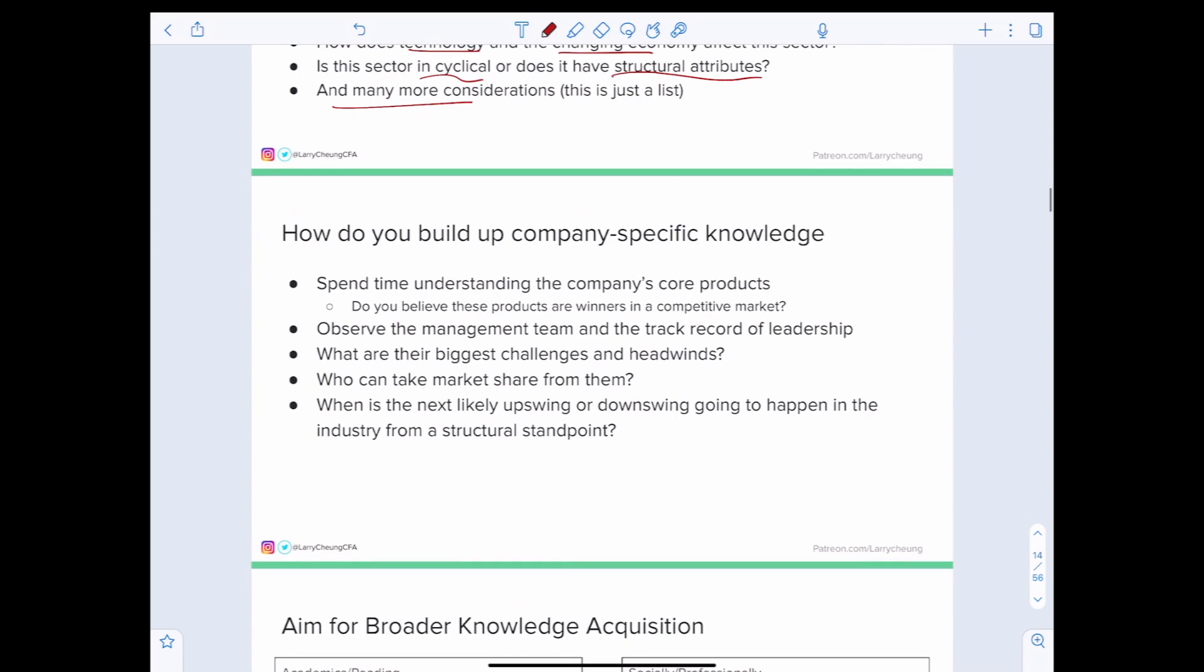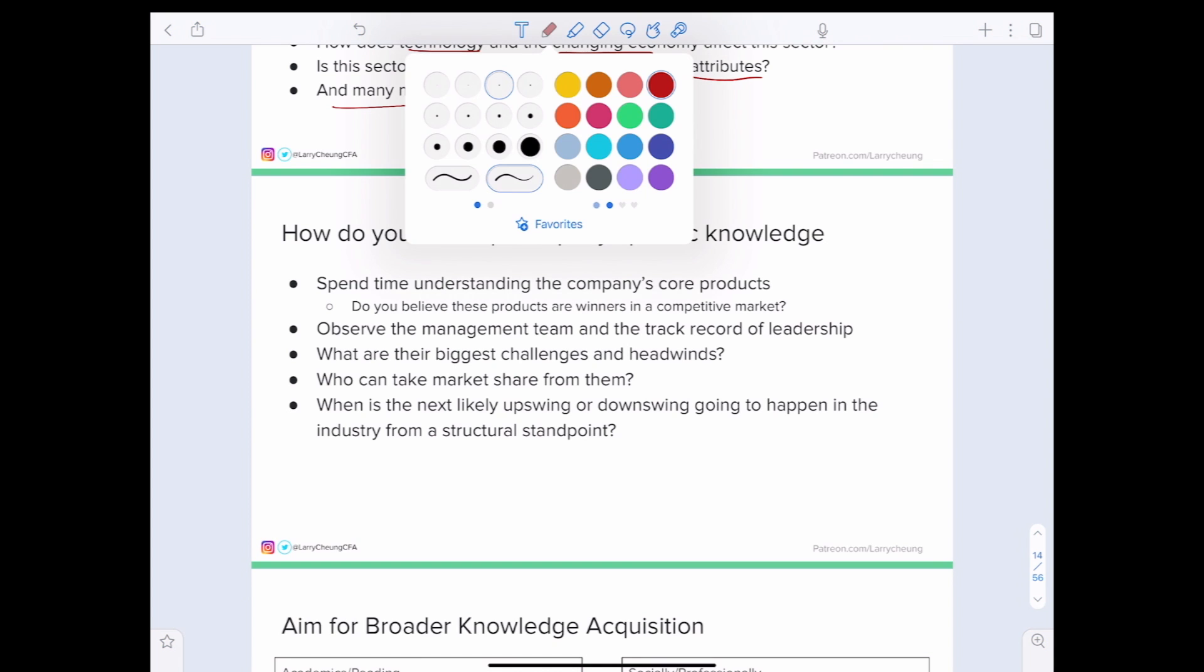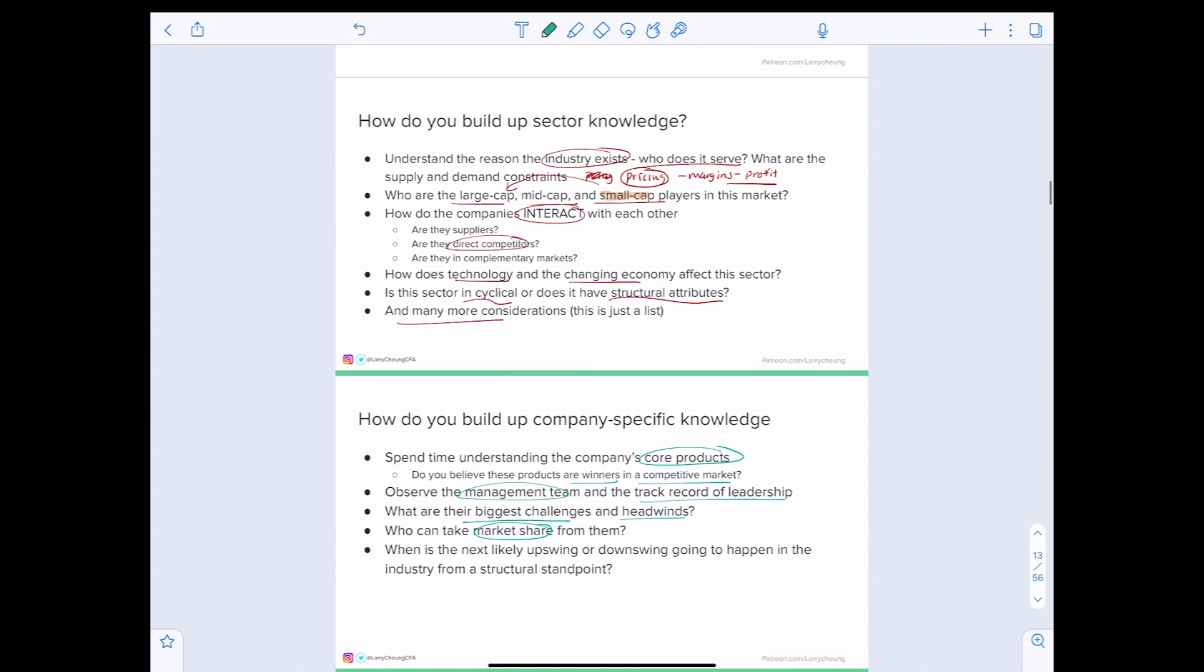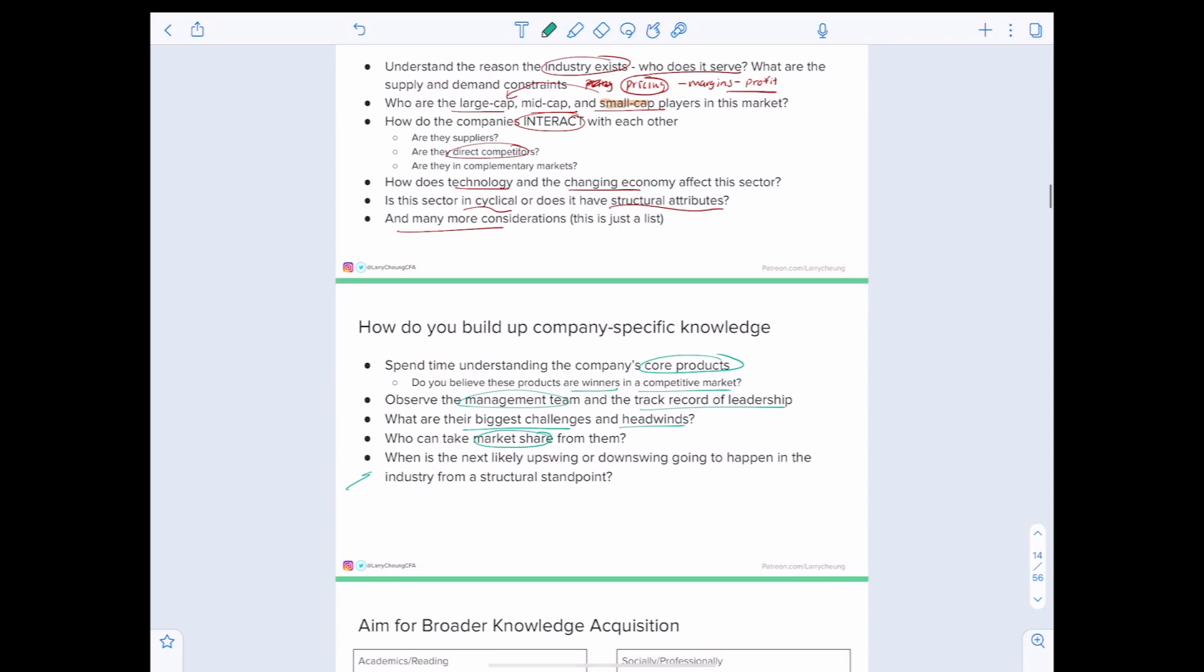Moving on to how you build up company-specific knowledge, I would say the most straightforward way to understand a company is through its products or services. Do you believe these products are winners in a competitive market? Then you want to observe the management team and their track record of leadership and see, do they have the ability to overcome their biggest challenges and headwinds? Are they going to be able to take market share or will they be losing market share to emerging players in the market? Combining your knowledge with industry and sector expertise, be able to understand when is the next upswing or downswing going to happen in the industry from a structural standpoint.